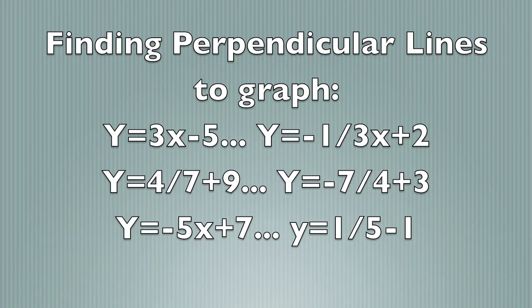However, if your m is already negative, when you find the negative reciprocal, you make it positive. So y equals negative 5x plus 7 would change to y equals 1 fifth x minus 1.